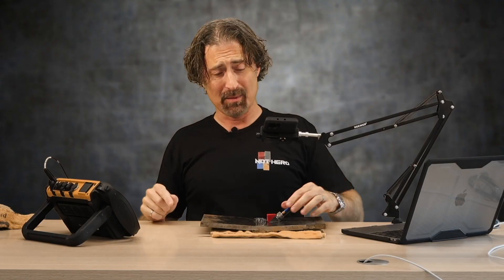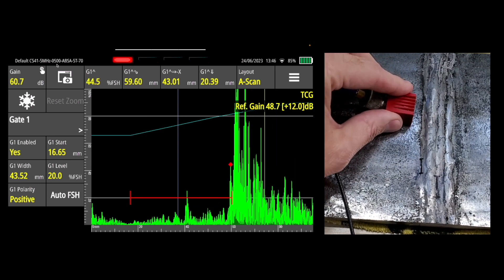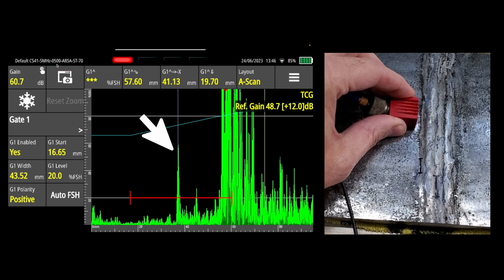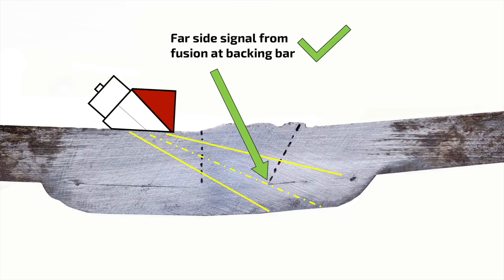This is exactly what's happening on this one. So the backing bar, as I move the probe back and forth, I get this nice signal at that first line. So that's the end of my first leg. That's the far side of the root all day, every day.